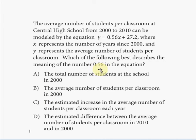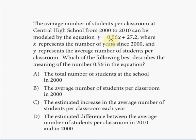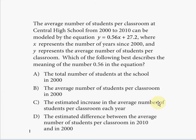We're asked to interpret the meaning of 0.56. As noted, 0.56 is the slope — the yearly slope — and this slope is positive, meaning there's a steady yearly increase of the average number of students per classroom by 0.56 students. So choice C is the correct answer: the estimated increase in the average number of students per classroom each year.